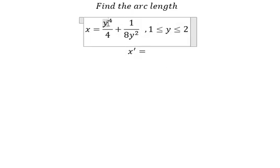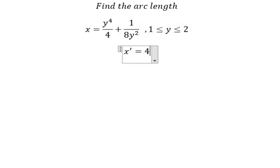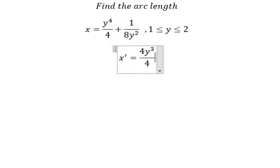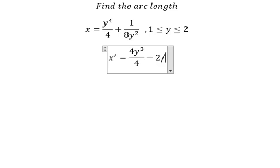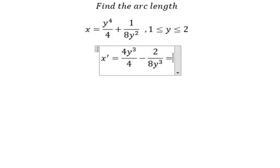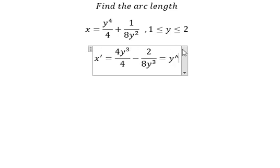So this one here we have 4y to the power of 3 over 4. This one here we have negative 2, 8y to the power of 3. And now we simplify and we have like this.